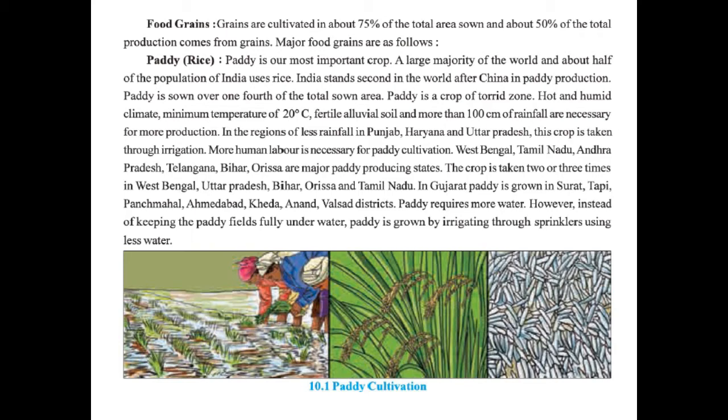Grains are cultivated in about 75% of total area sown and about 50% of total production comes from grains. So we can make out that the large majority of the area is used for the cultivation of grains. The major food grains are as follows.